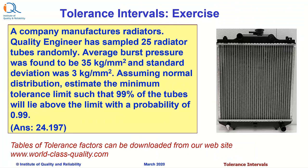Now, try this exercise. A company manufactures radiators. A quality engineer has sampled 25 radiator tubes randomly. Average burst pressure was found to be 35 kg/mm² and standard deviation was 3 kg/mm². Assuming normal distribution, estimate the minimum tolerance limit such that 99% of the tubes would lie above this limit with a probability of 0.99. The answer is given on screen. Tables of tolerance factors can be downloaded from our website at www.world-class-quality.com.